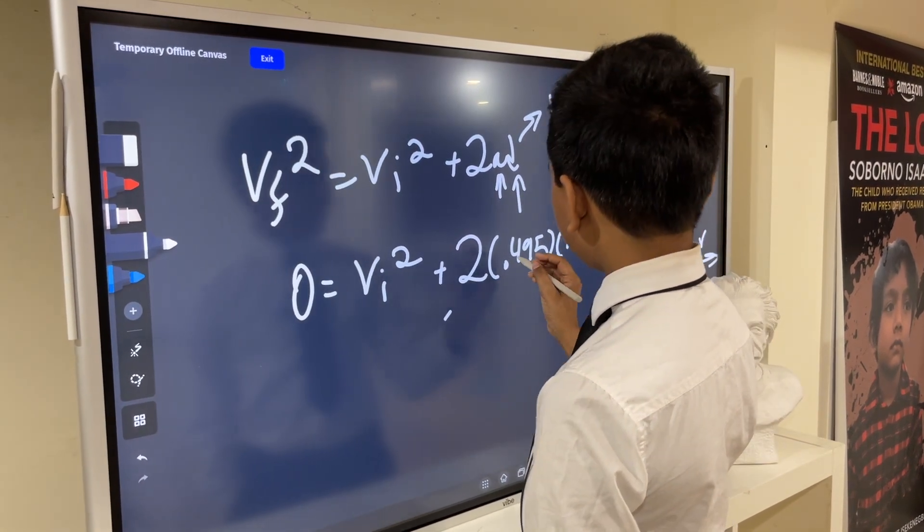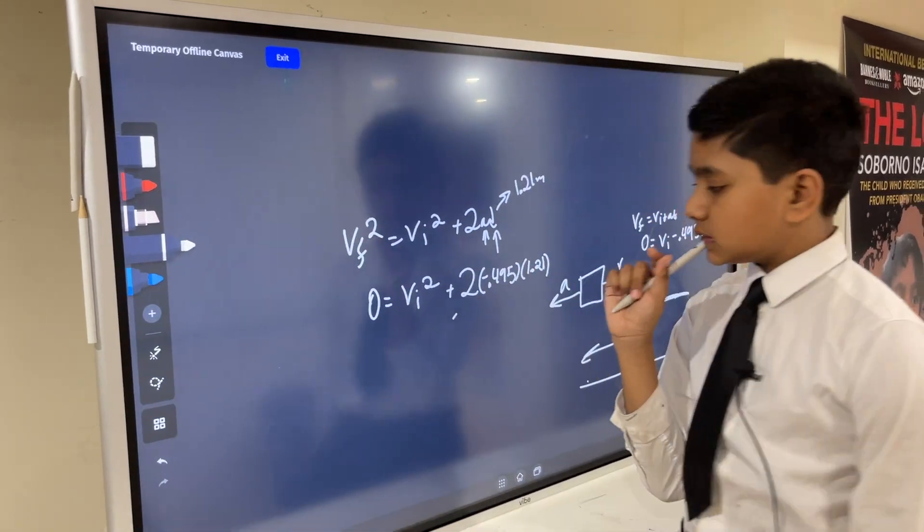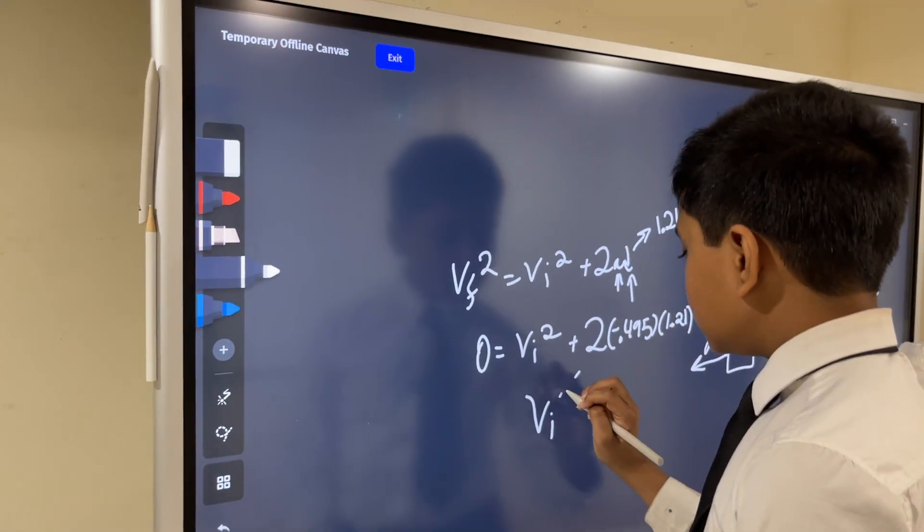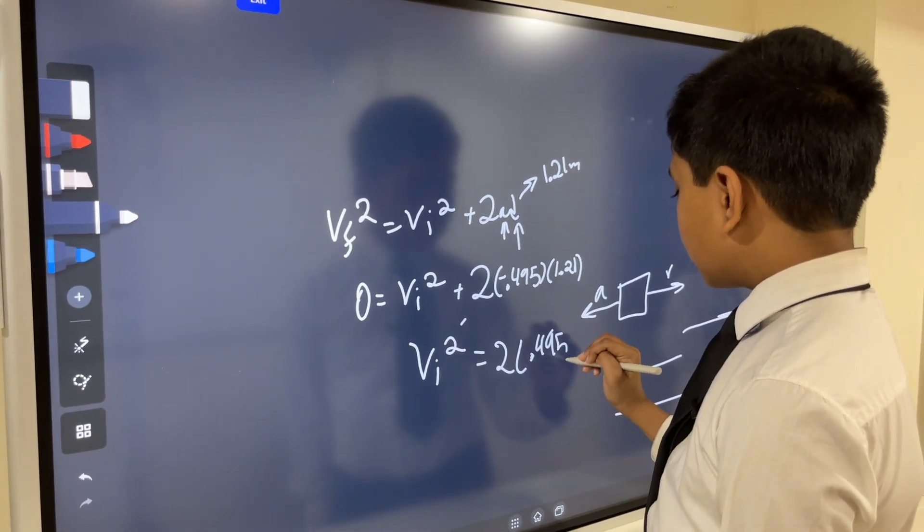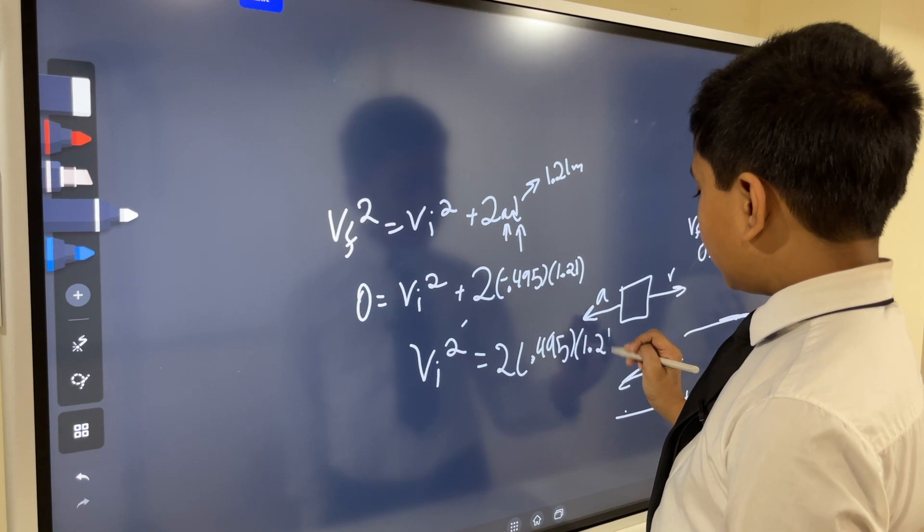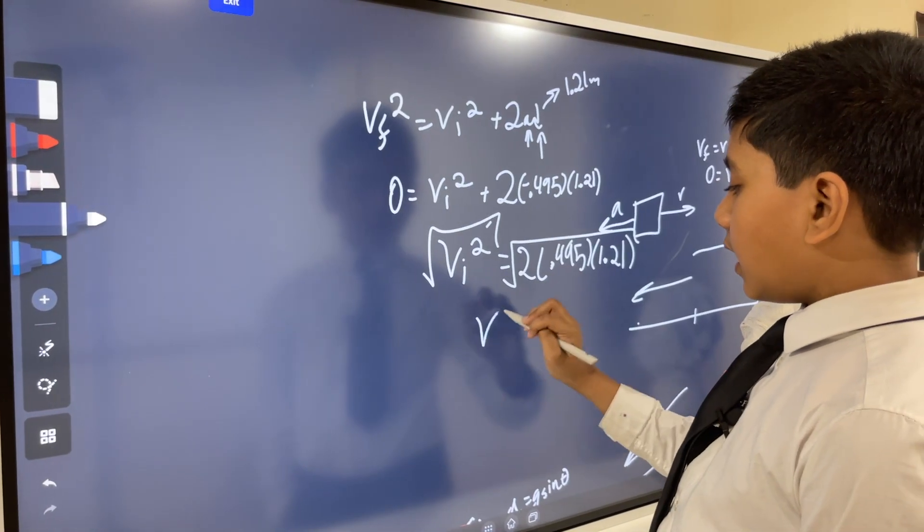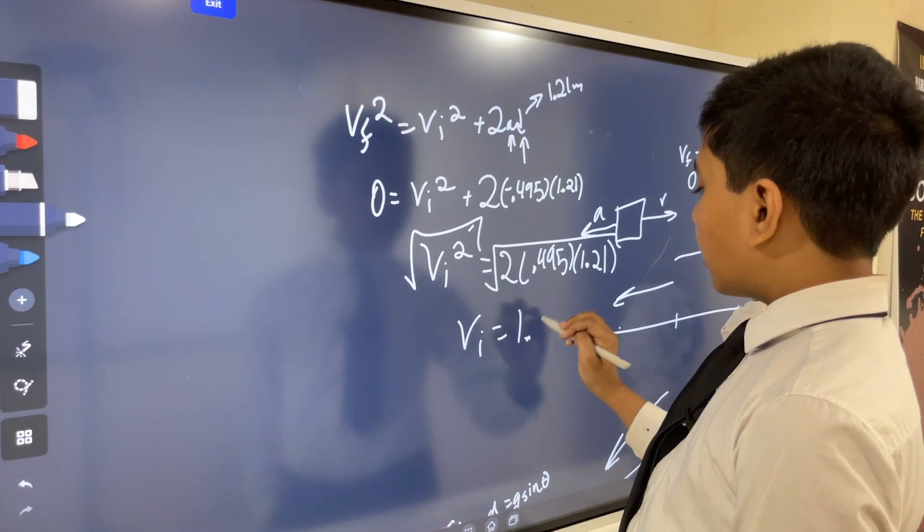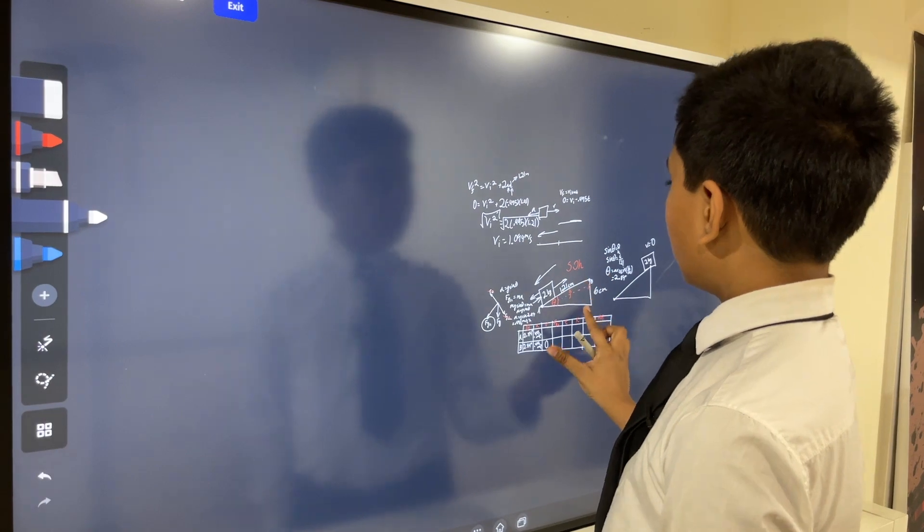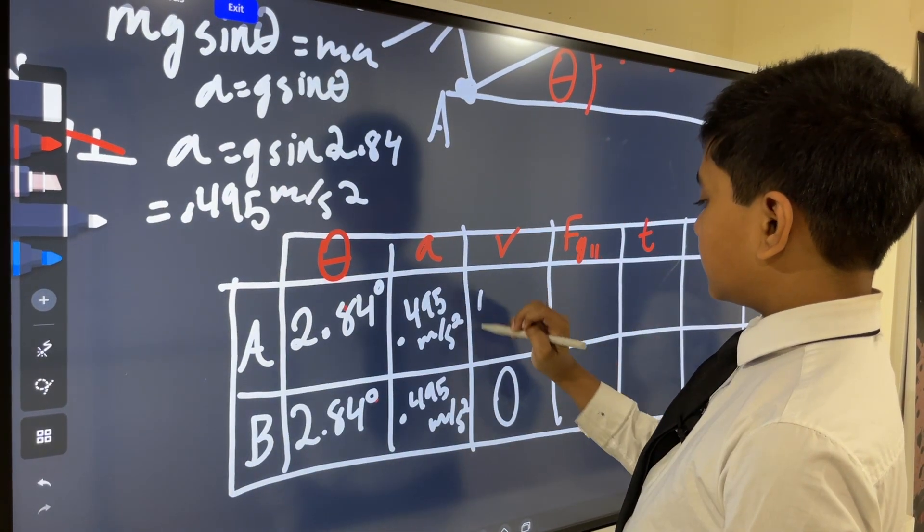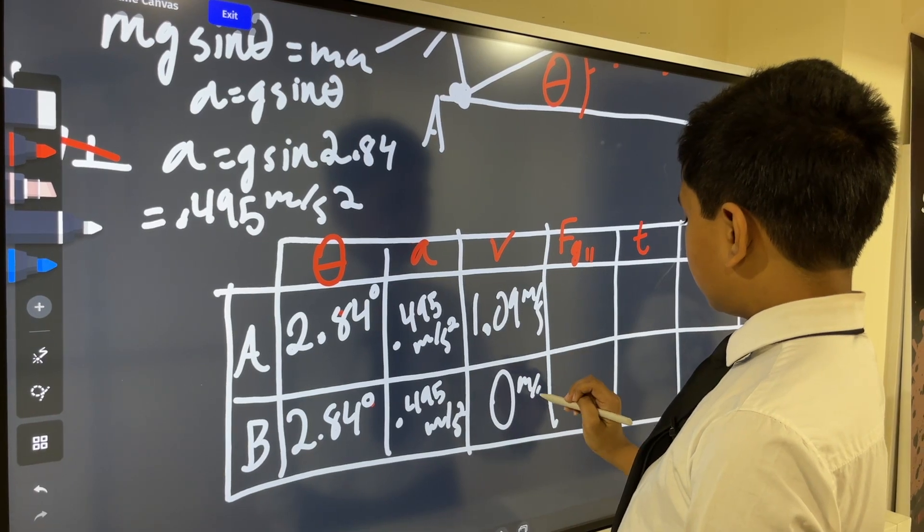Now that I think about it, maybe this should actually be negative. Now, just bringing this over to the other side, 0.495 times 1.21, and then taking the square root, we find out that VI is equal to 1.094 meters per second. So we know this is 1.09 meters per second. This is 0 meters per second.